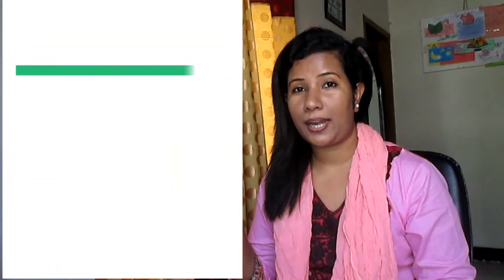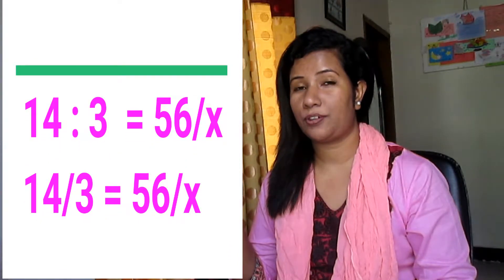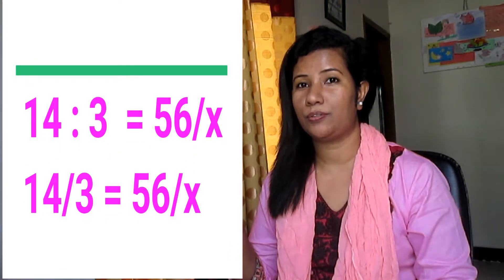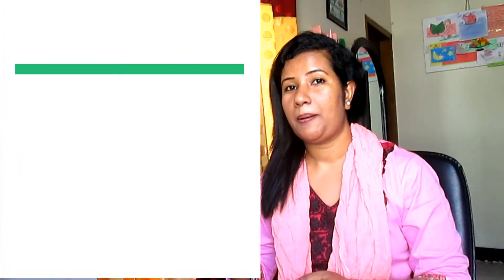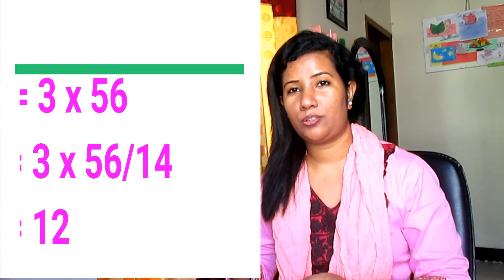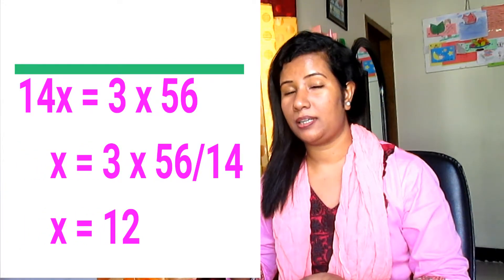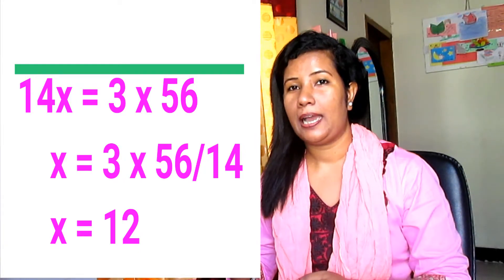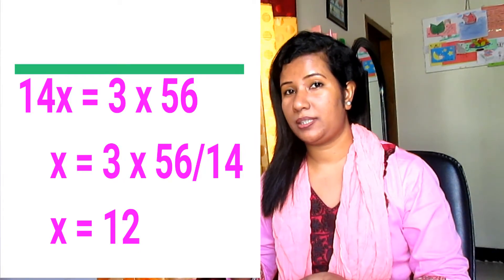14 to 3 means 14 divided by 3 equals 56 divided by x. So x equals 56 multiplied by 3, divided by 14. And since 14 times 4 equals 56, x equals 12.